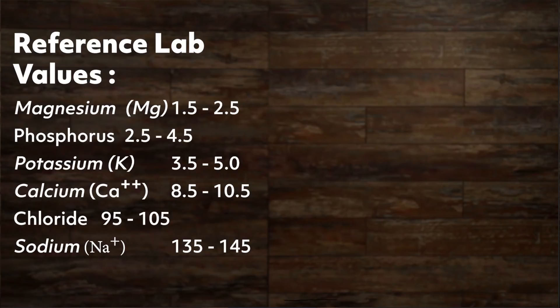Phosphorus is 2.5 to 4.5. Potassium is 3.5 to 5.0. Calcium is 8.5 to 10.5. Chloride is 95 to 105. And sodium is 135 to 145. Let's look at each one individually, focusing on their basic function in the body, along with the signs and symptoms you will see.